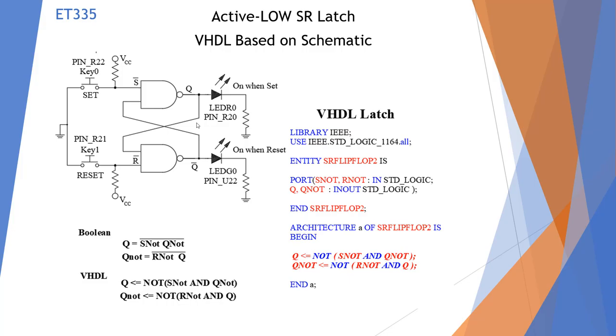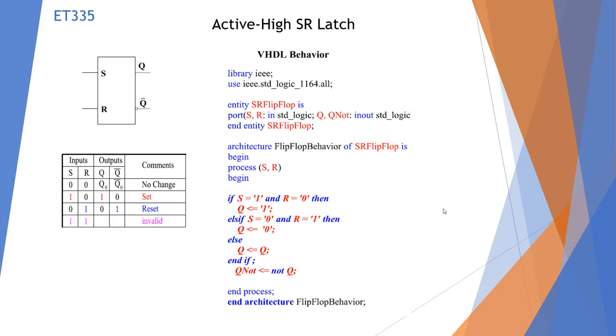Here are the VHDL equations: Q equals NOT(S_NOT AND Q_NOT) and Q_NOT equals NOT(R_NOT AND Q). That's based on our schematic and we could go back through and follow through on that.